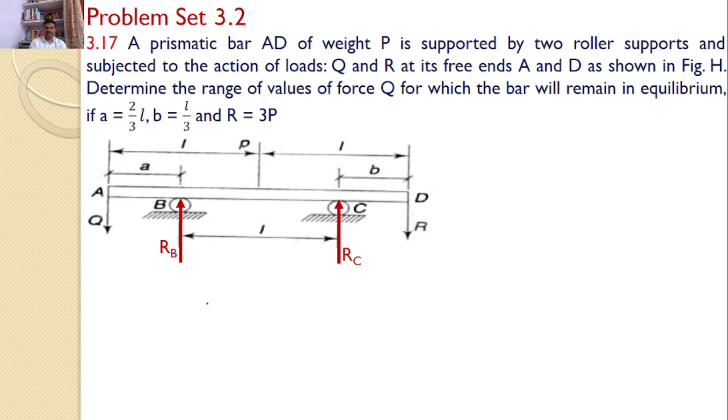Now, let us apply the equilibrium equation sigma Fy equals 0. The reaction forces RB plus RC equals the downward forces P plus Q plus R, where P is the self-weight. Given that R equals 3P, upon substituting, I get RB plus RC equals 4P plus Q. This is equation number 1.